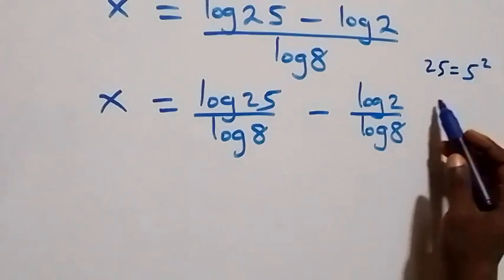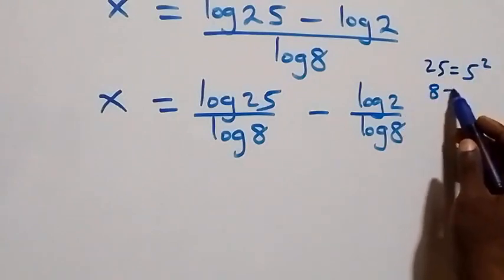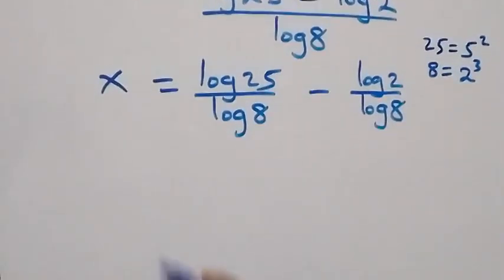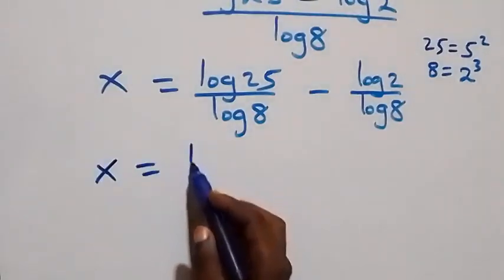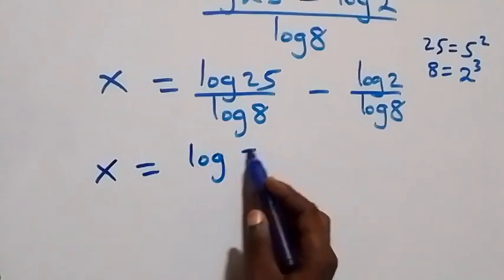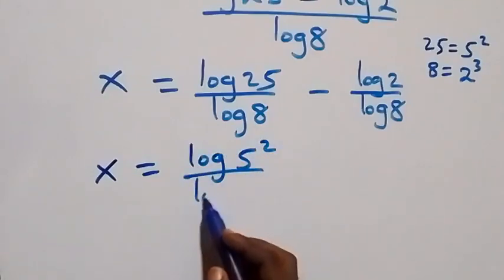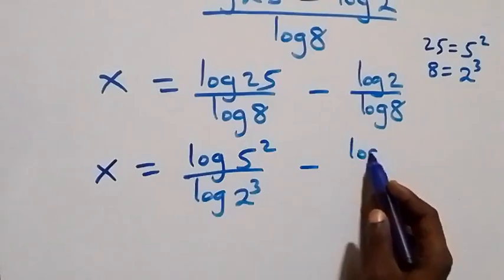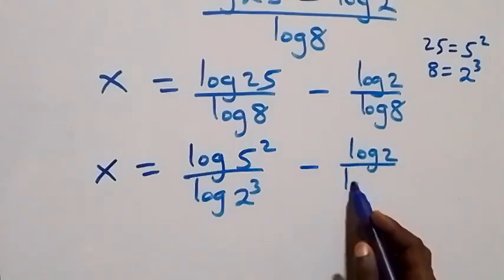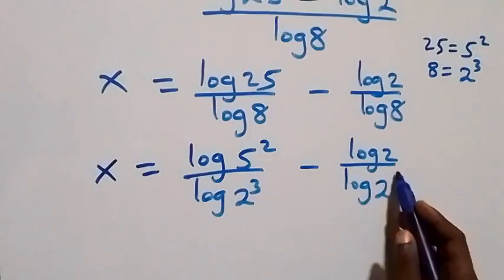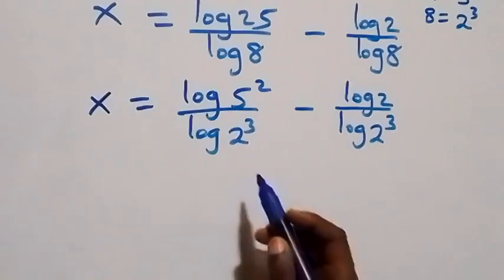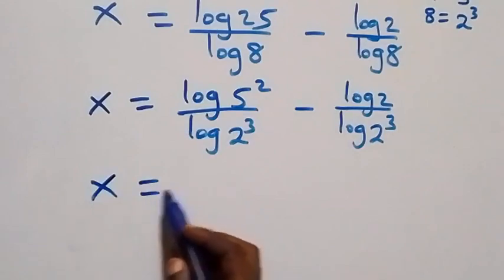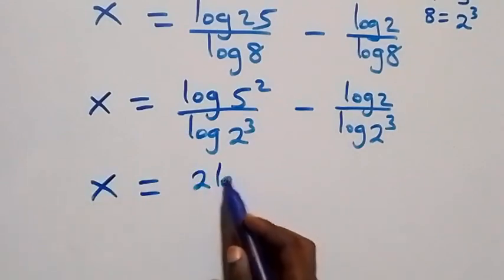Next step: from here we can express 25 as 5 times 5 which is 5 squared, and 8 can also be expressed as 2 times 2 times 2 which is 2 raised to power 3. What we have becomes x equals to log 5 squared over log 2 cubed, minus log 2 over log 2 cubed. Applying the power rule of logarithms, we have x equals to 2 log 5...